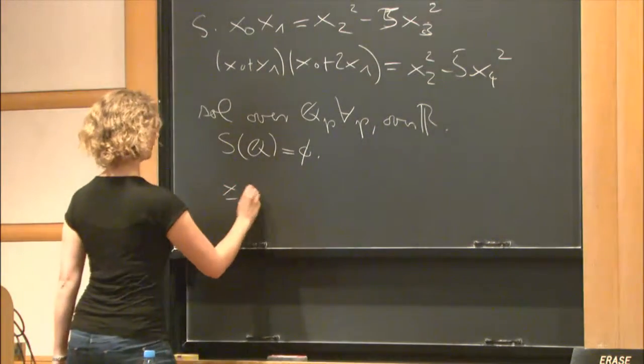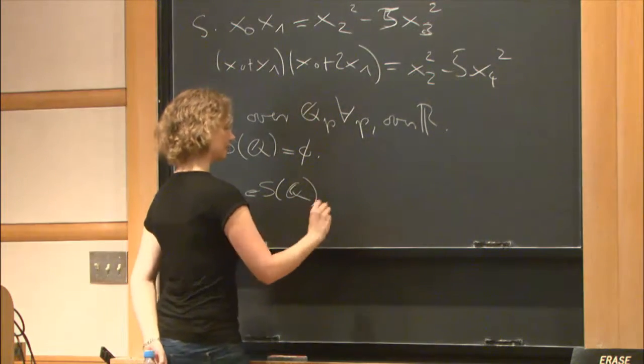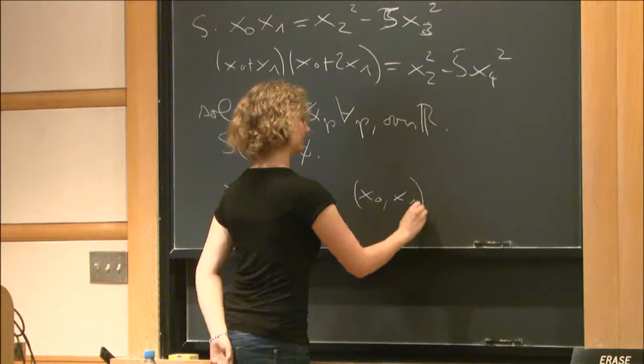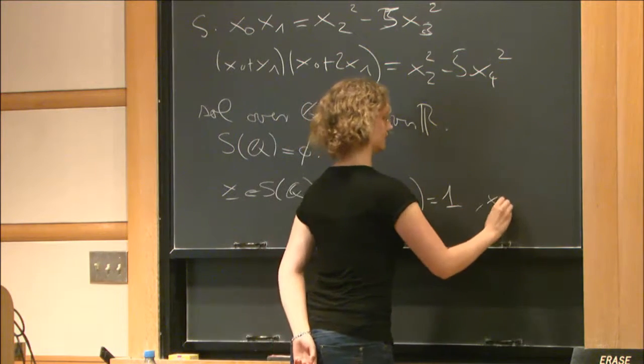Assume x is a rational point in S. We can normalize the coordinates in a way such that x0 and x1 are both integers co-prime.